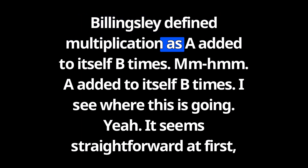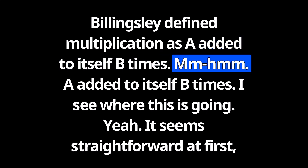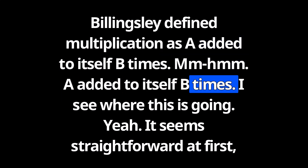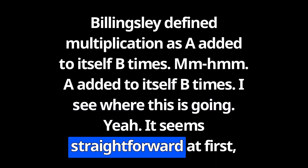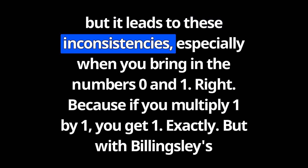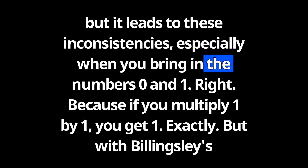In his translation, Billingsley defined multiplication as A added to itself B times. It seems straightforward at first, but it leads to these inconsistencies, especially when you bring in the numbers zero and one.